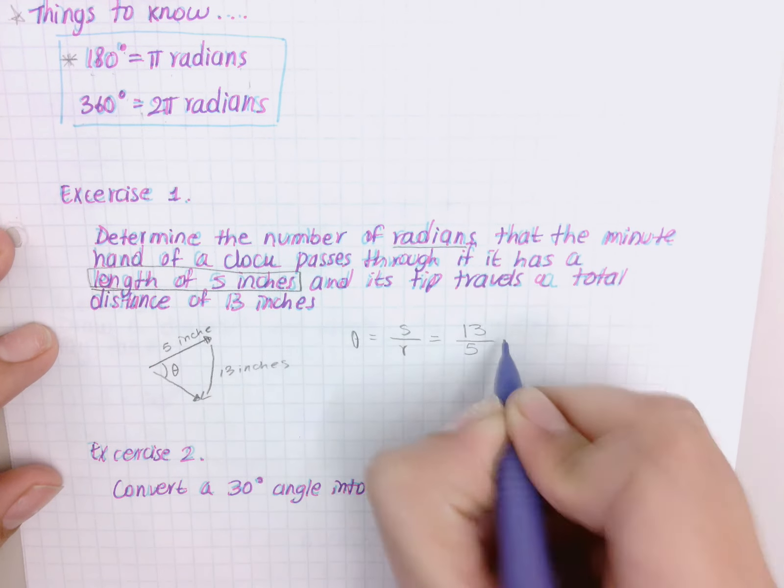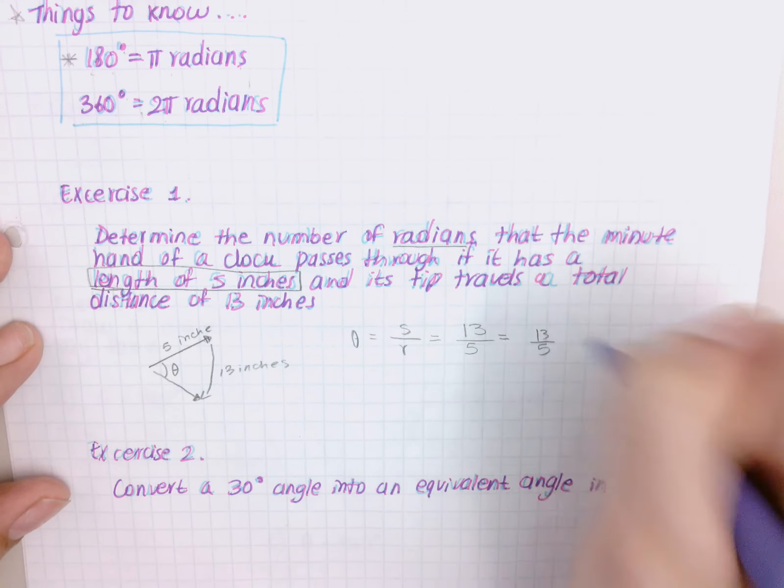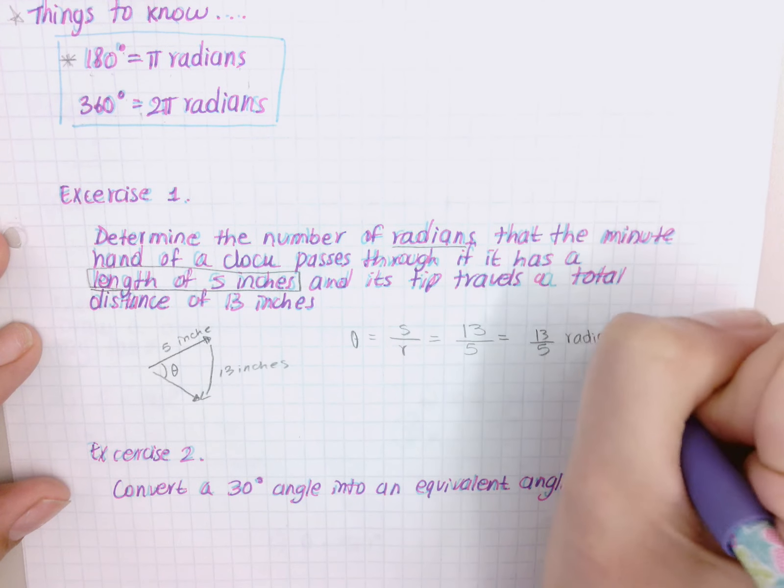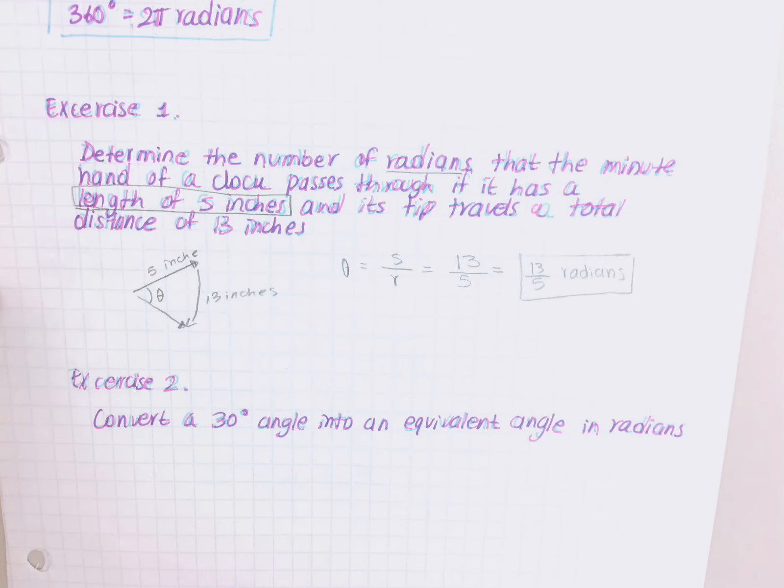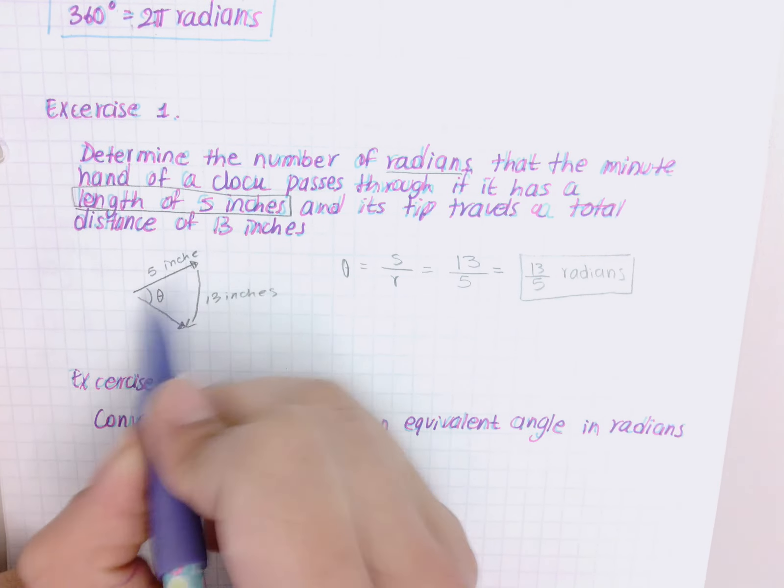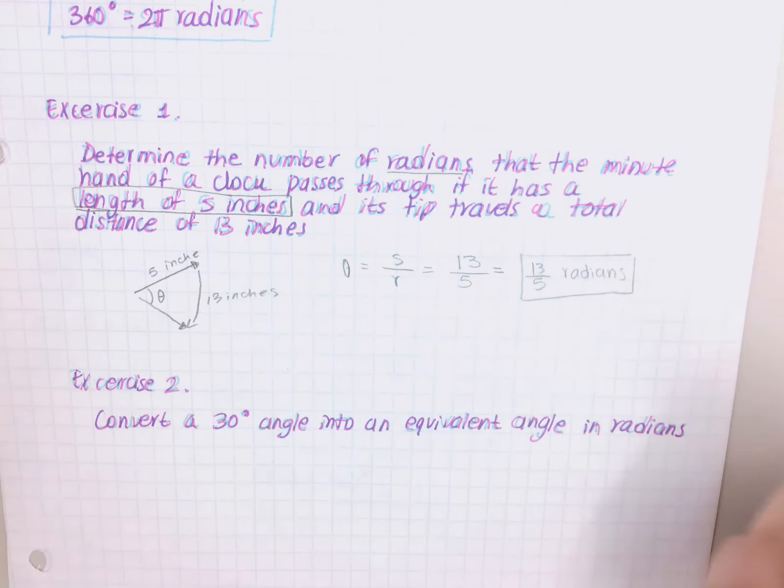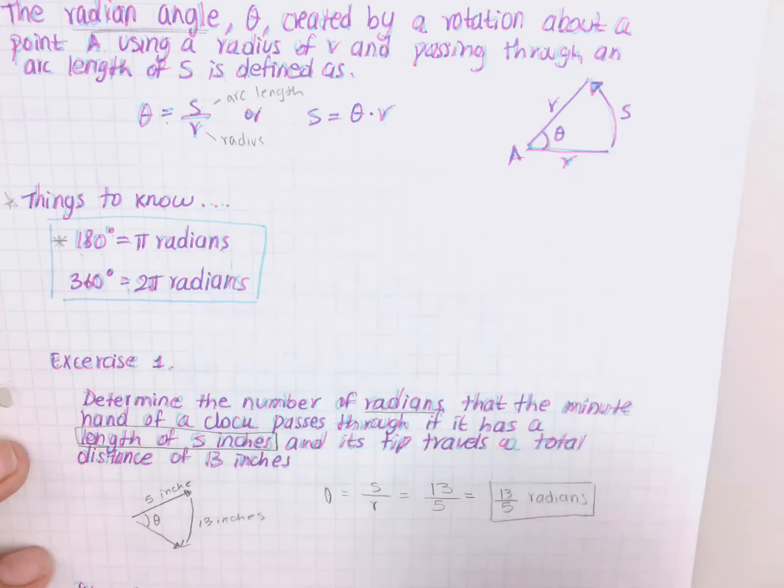So in this case my radius is 5 and my arc length is 13. Now you can actually just leave it like that - you have 13 over 5 radians. Okay, and that's it. So it's all about reading the problem and you're always going to make some type of diagram, and you're going to label what they gave you.